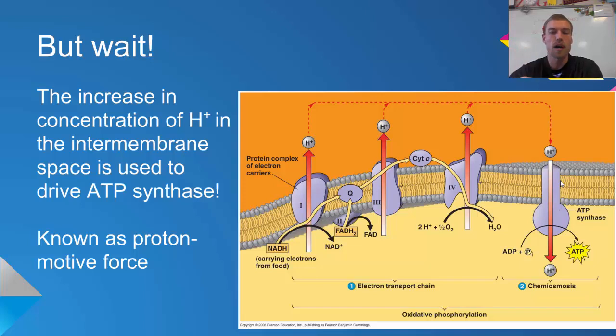We use osmosis to help facilitate this chemical process, and this force is called the proton motive force. We have created this high concentration of protons on one side of the membrane that drives the ATP synthase to produce ATP.